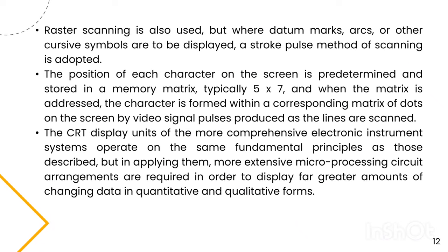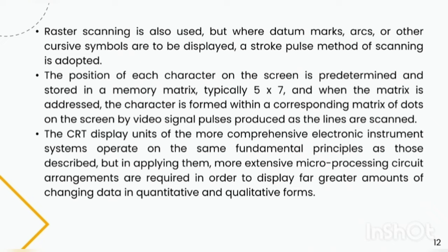Raster scanning is also used, but where data marks, arcs, or other cursive symbols are to be displayed, a stroke pulse method of scanning is adopted. The position of each character on the screen is predetermined and stored in a memory matrix, typically 5x7, and when the matrix is addressed, the character is formed within a corresponding matrix of dots on the screen by video signal pulses produced as the lines are scanned.